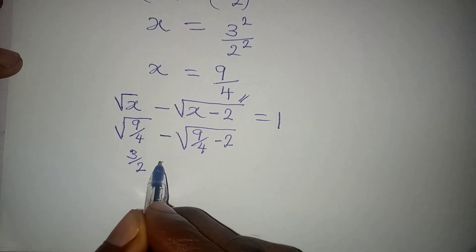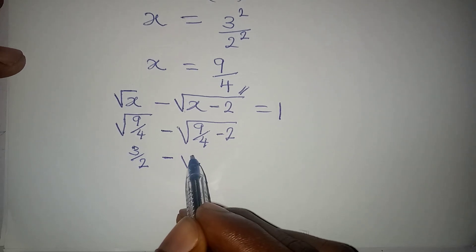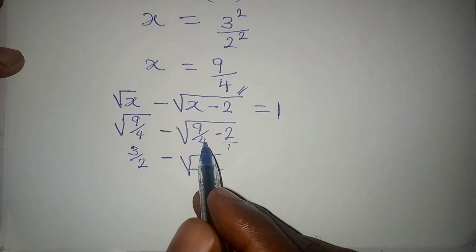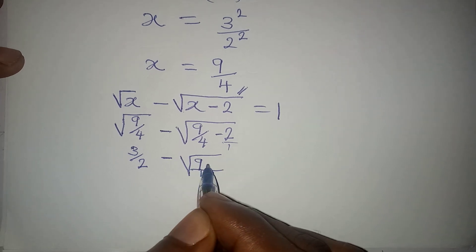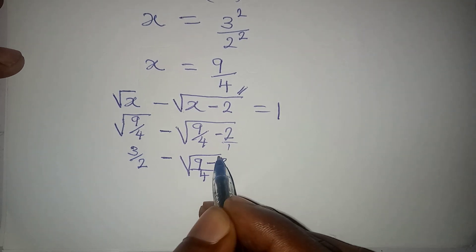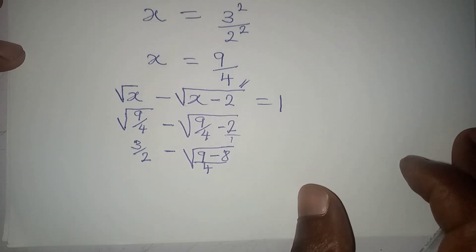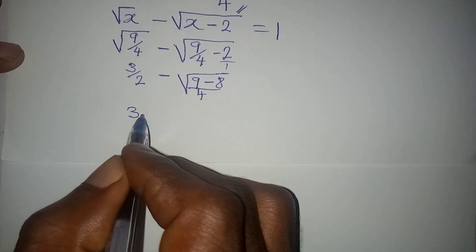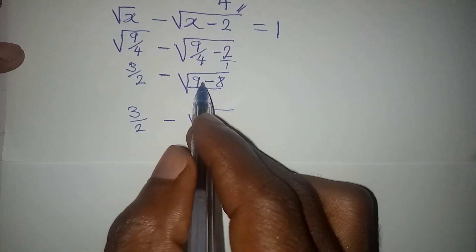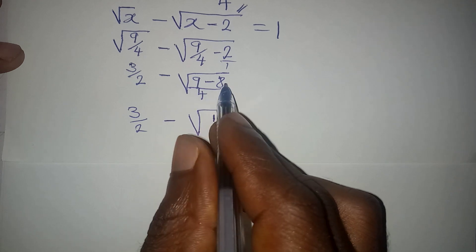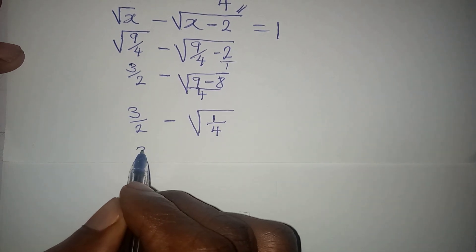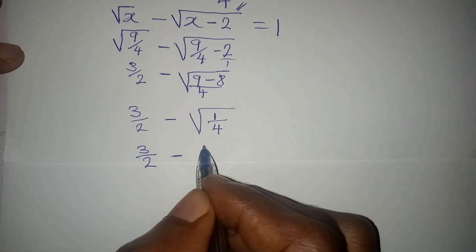Inside the second square root, 9 over 4 minus 2: writing 2 as 8 over 4, we get 9 minus 8 over 4, which is 1 over 4. So we have 3 over 2 minus square root of 1 over 4. Square root of 1 is 1 and square root of 4 is 2, so we have 3 over 2 minus 1 over 2.